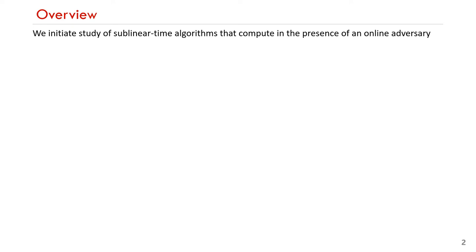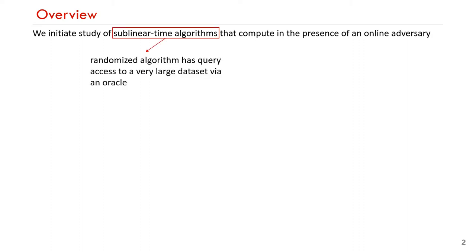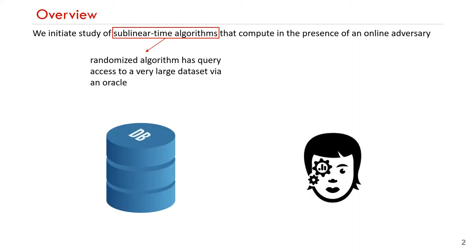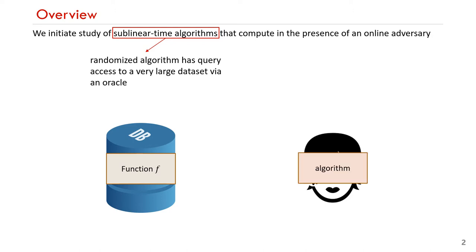We initiate the study of sublinear time algorithms that compute in the presence of an online adversary. A sublinear time algorithm is a randomized algorithm that has query access to some very large data set via an oracle. Here is a depiction of a data set and an analyst that has oracle access to it. We represent the data set via a function f that takes examples to their label. The analyst runs an algorithm which makes queries to f and outputs some approximate answer about this function. The number of queries made by the algorithm should be sublinear in the size of the input function.